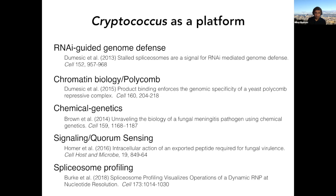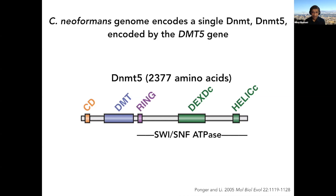Back to DNA methylation. The Cryptococcus genome encodes a single cytosine DNA methyltransferase homologue, which we call the DMT5 gene — so DNMT5 is the name of this enzyme. The DNA methyltransferase domain is a relatively small part of the protein.